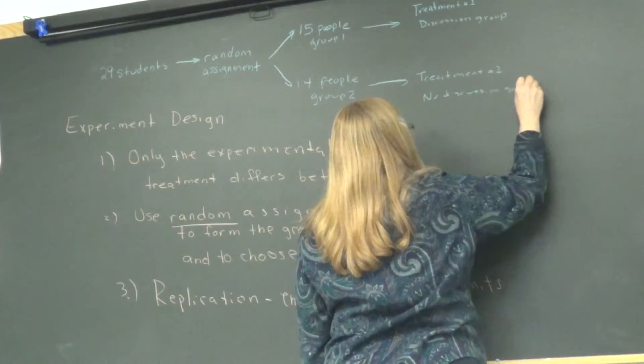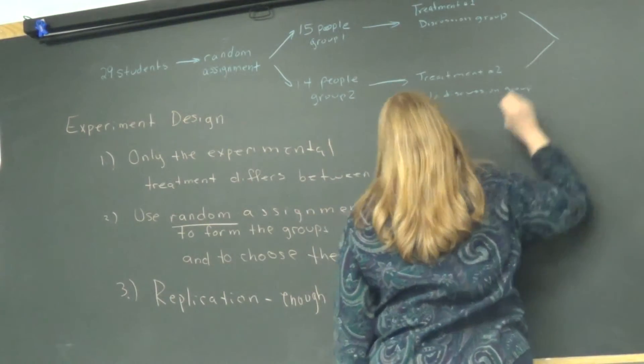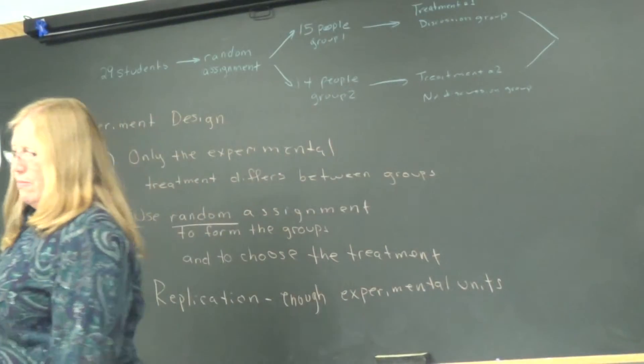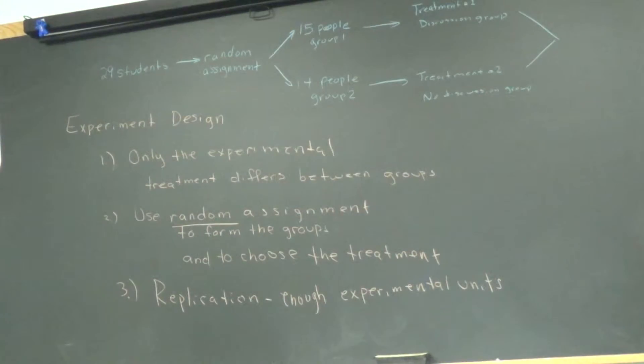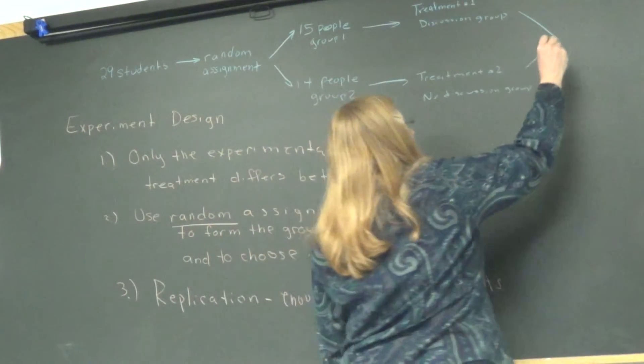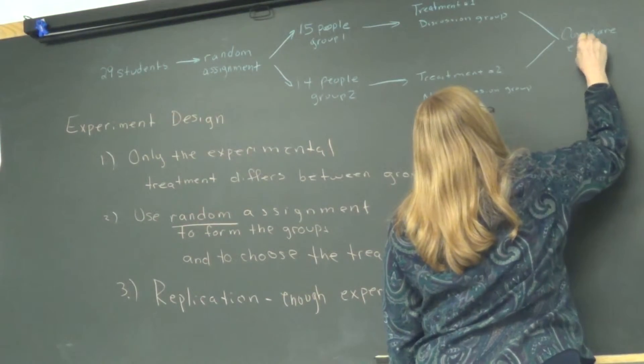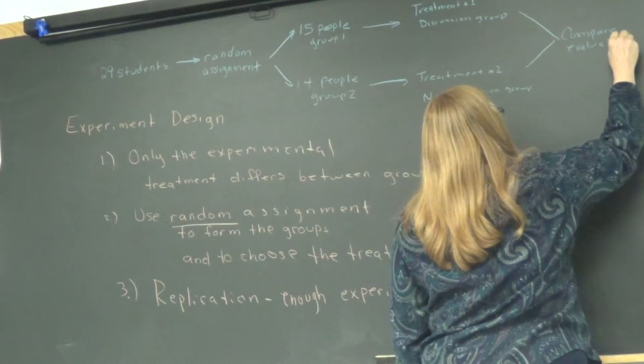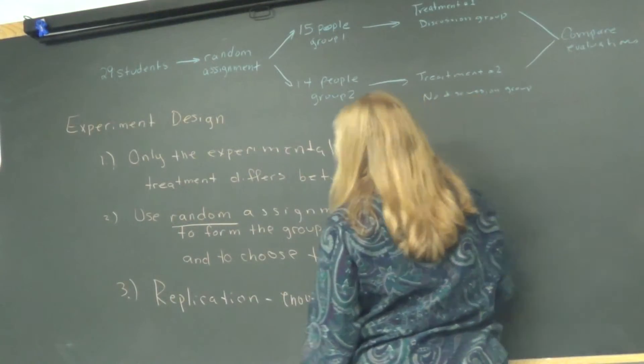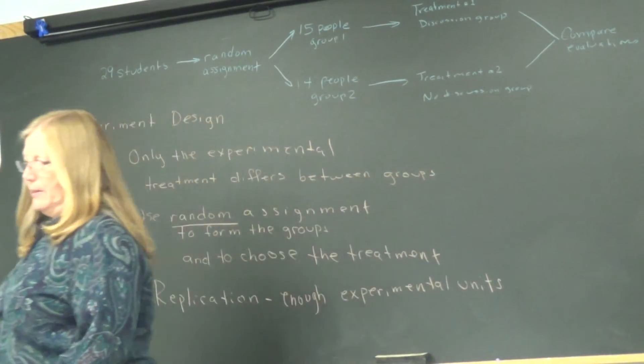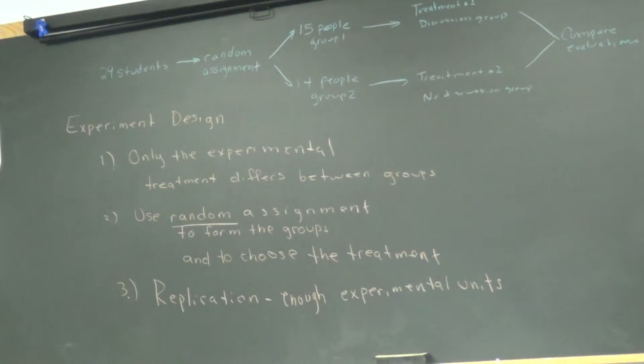So, when we come together at the end, what will we look for, Allie? You would compare the evaluation of finals. Right. Somebody's got to make a determination at the end. We're going to have to compare the evaluations. Allie, that's a map of an experiment. Those are the parts you need in each one.